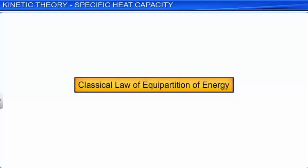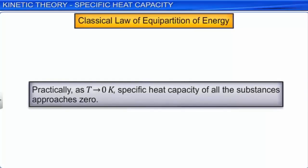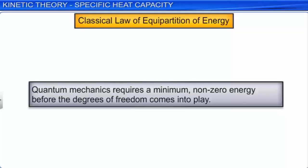All these predictions of specific heat capacities are based on the classical law of equipartition of energy, where specific heat capacities are independent of temperature. But practically this is not true. As the absolute temperature tends towards zero, the specific heat capacity of all substances approaches zero. This is because at low temperatures, the degrees of freedom get frozen. This was explained by quantum mechanics, because it requires a minimum non-zero energy before the degrees of freedom come into play.